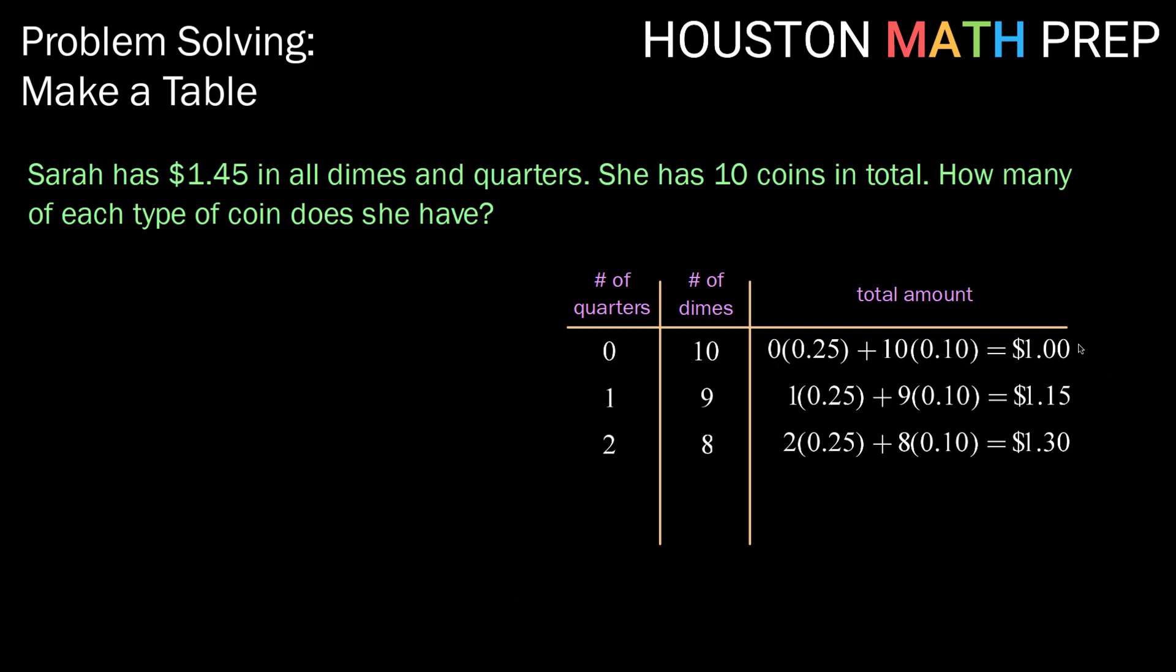But now, we might start to see what we think is a pattern emerging. So, when we increase from 0 to 1 quarter, we went from $1 to $1.15. And when we went from 1 quarter to 2 quarters, we went from $1.15 to $1.30.